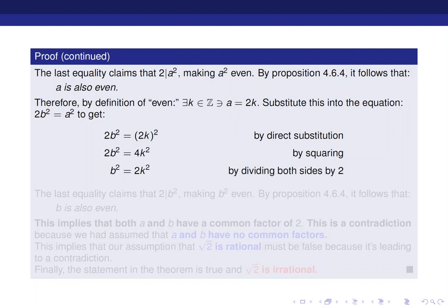Which means that b squared is going to be equal to 2k squared. But keep in mind, k is an integer, so k squared is an integer, which means b squared is a multiple of 2. In other terms, b squared is even. Okay, so if b squared is even, that makes b itself even by the same proposition that we used previously.